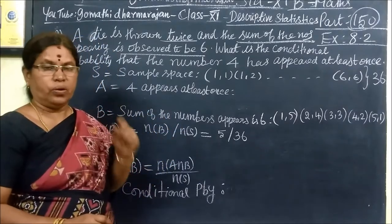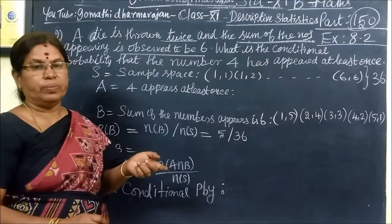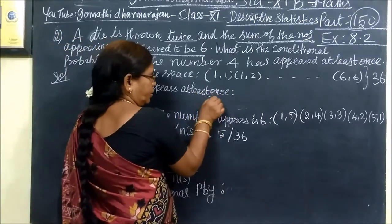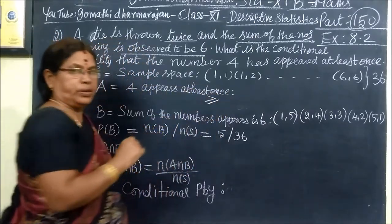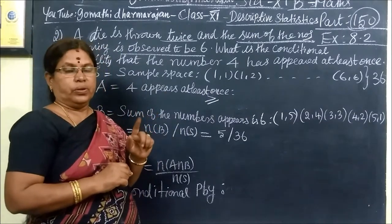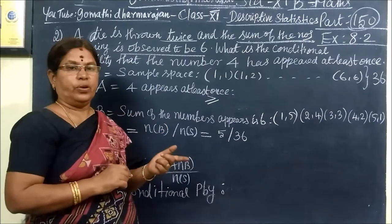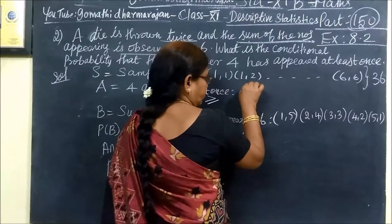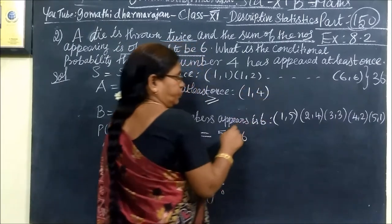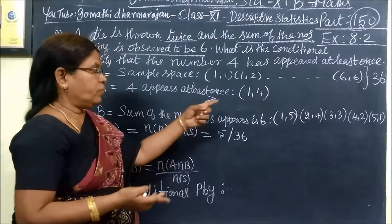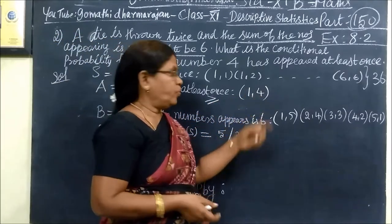At least one, one time here. More than one time here, greater than or equal. In your condition, greater than or equal. At least four is at least once. At least one four. When you throw a die twice, at least one four, one four.